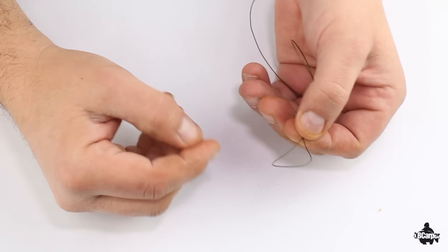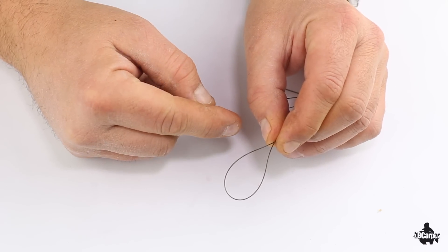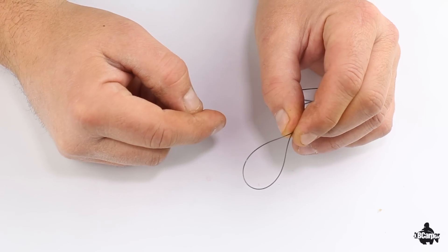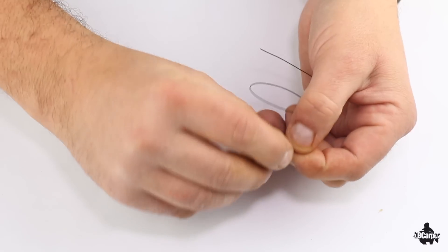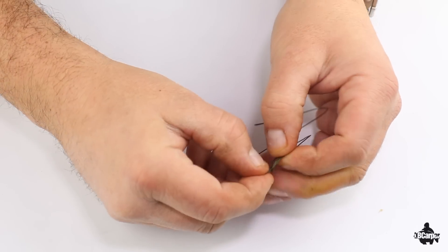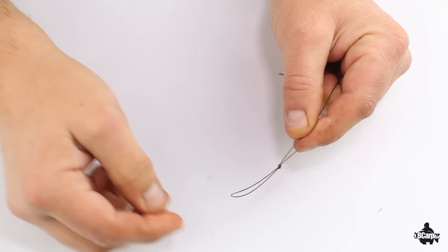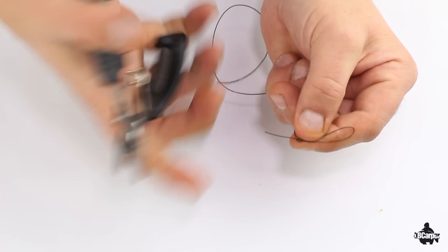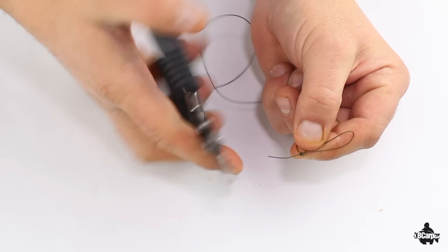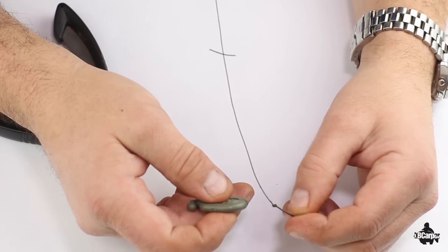Now this loop is going to be the height of your pop-up, so pay particular attention to it. Just do an overhand knot, try to keep the natural curve. Simple as that. That's going to be the height of your pop-up. Trim this down, strip back the coated braid about an inch and a bit.